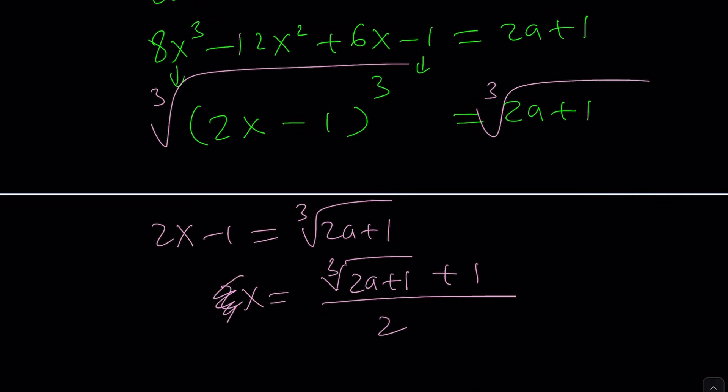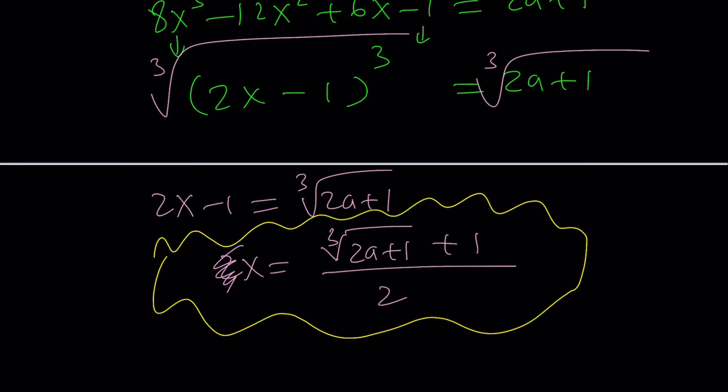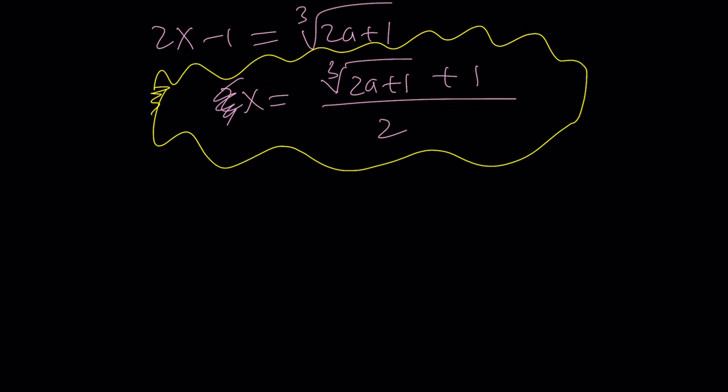It should be the same. We can't expect to get different solutions from different methods. Actually, if that happens, that will be pretty interesting. Or it will be inconsistent. Or we probably made a mistake.